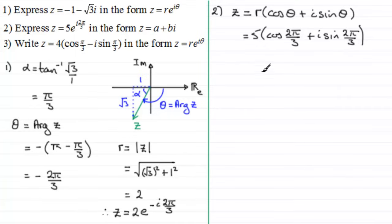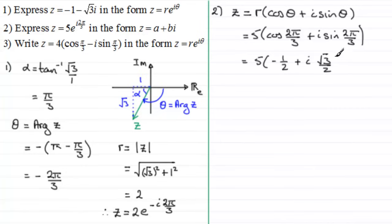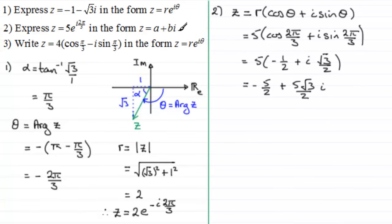Cosine of 2π/3 radians is minus a half, so we've got 5 multiplied by minus a half. The sine of 2π/3 is root three over two, so plus i times root three over two. Multiplying out the bracket gives minus five over two plus five root three over two · i. That's our answer in a plus bi form.